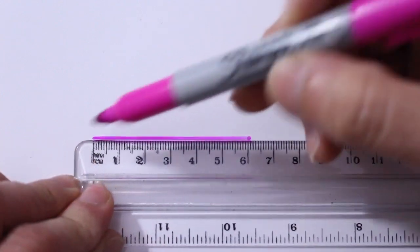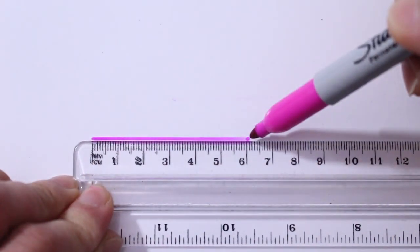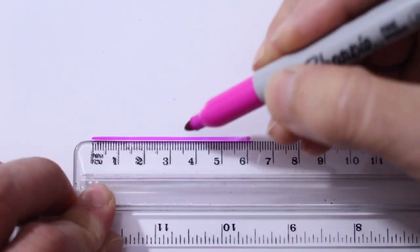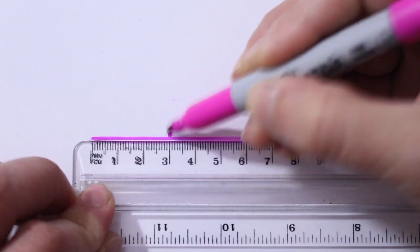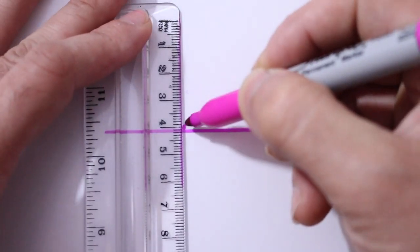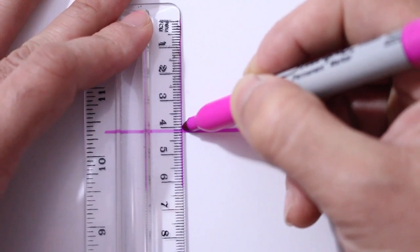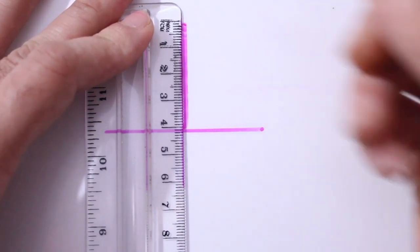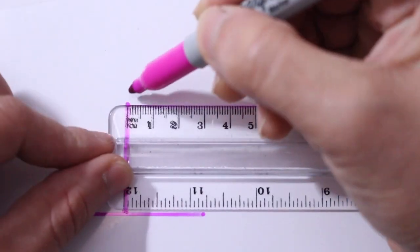The first thing you want to do is go ahead and mark six centimeters on your plastic that you're going to be cutting. Then right here where it says three just make a little dot just like so. Then from the center dot you want to go ahead and go four centimeters up. On the top of that you're going to go half centimeter out.